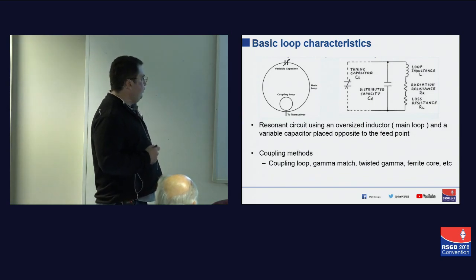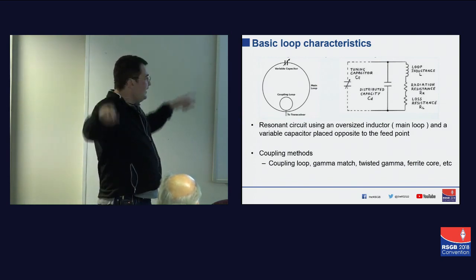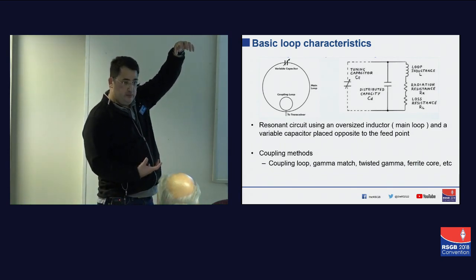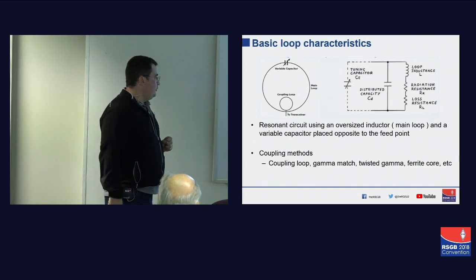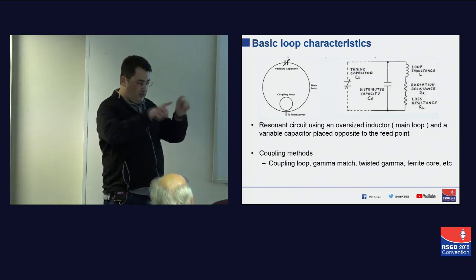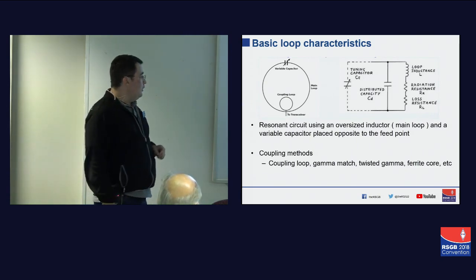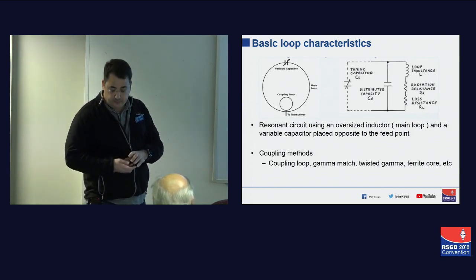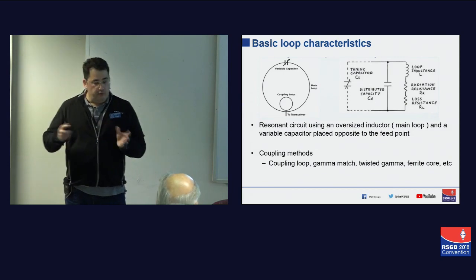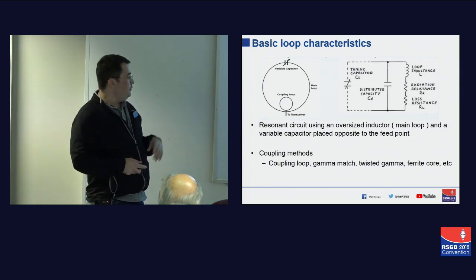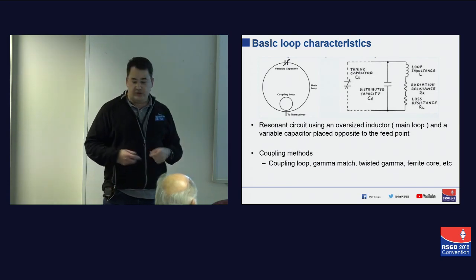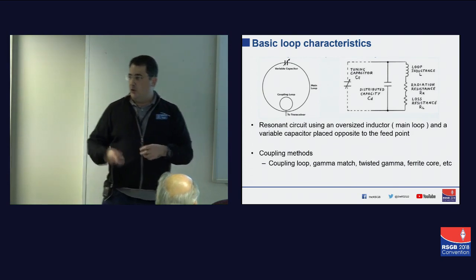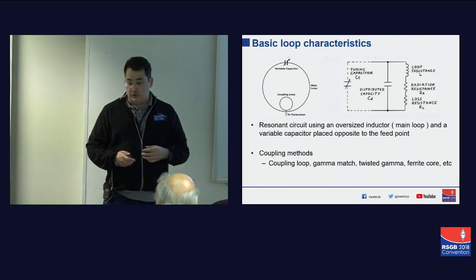Effectively being a resonance circuit using an oversized inductor — the main loop — you then have a variable capacitor that's typically opposite the feed point. Now there are multiple ways you can feed a loop: you can have the coupling loop, which is a smaller loop typically a fifth of the size of the main loop, a gamma match, a twisted gamma match, or ferrite cores used as a transformative coupling.